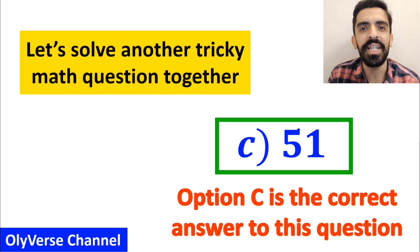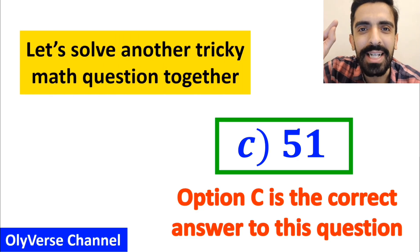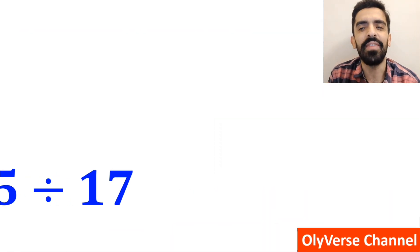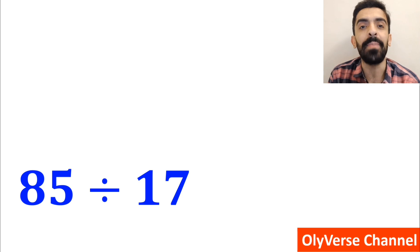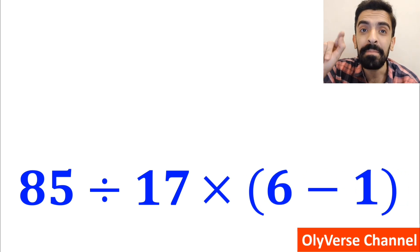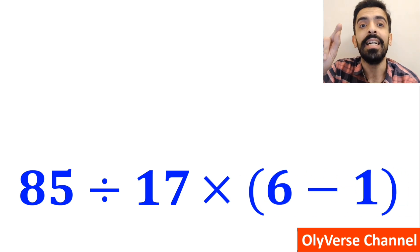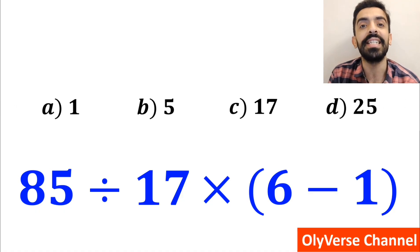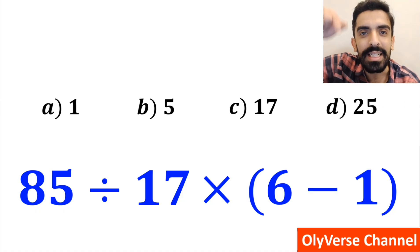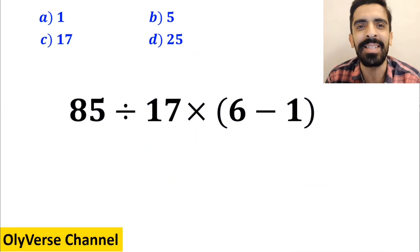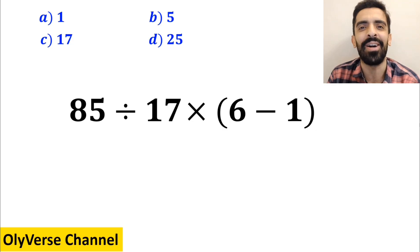Now let's solve another tricky math question together. What is the value of the expression 85 divided by 17 times open parenthesis 6 minus 1 close parenthesis? Which option do you think is the correct answer? Let's take a closer look and solve it together.